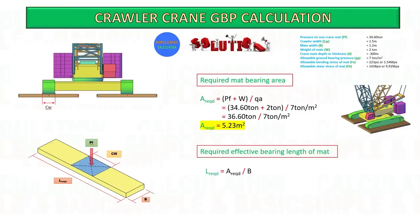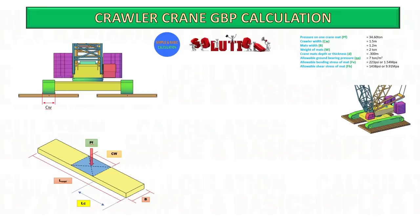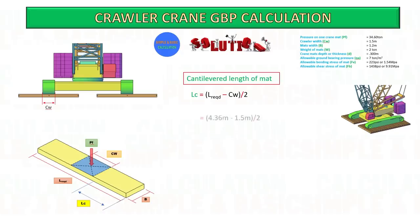The required effective bearing length of the mat is obtained by dividing the mat bearing area by the width of the mat. Next, the cantilevered length of mat is calculated as L-required minus crawler track width, divided by 2.